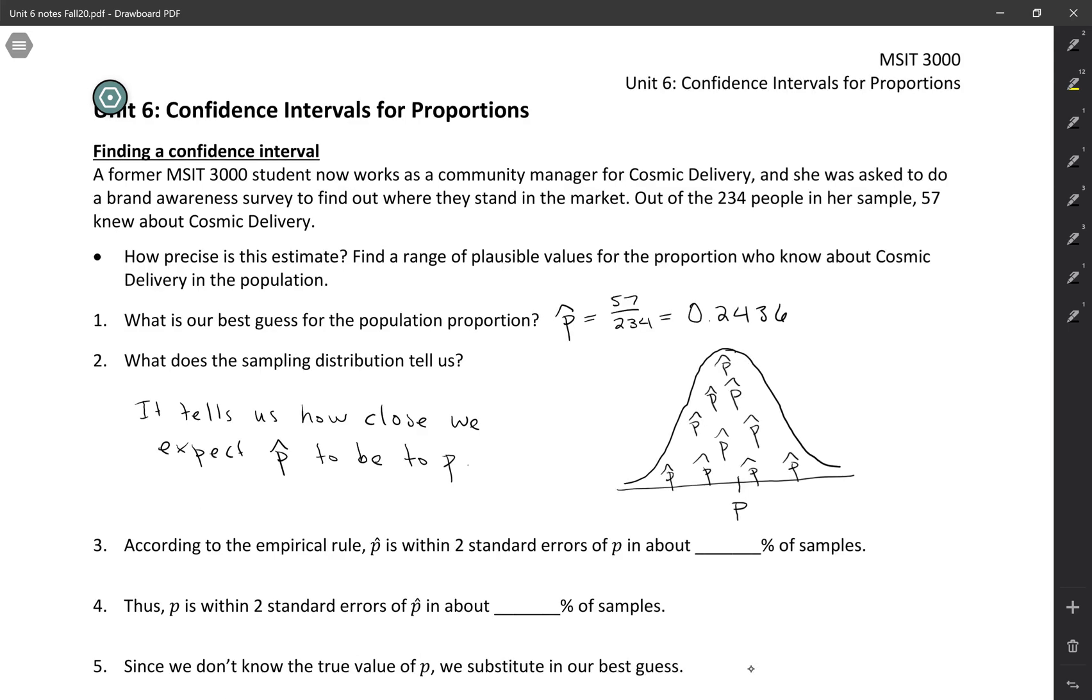So we know that the sampling distribution is normal, assuming that the sample size is large enough, and we have a pretty large sample here, 234 people.